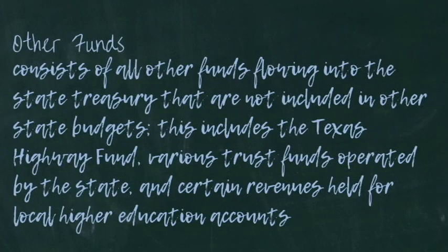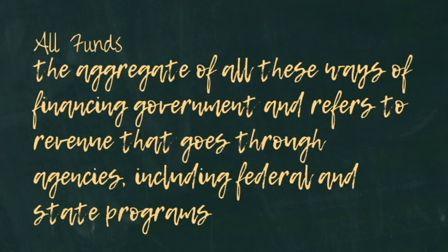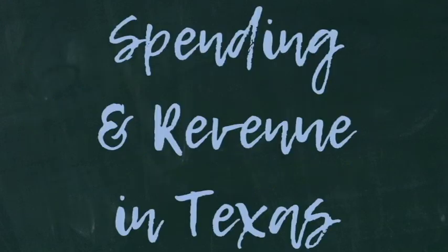Other funds consist of all other funds going into the state treasury not included in the other budget categories, including the Texas Highway Fund, various trust funds, and certain revenues held for local higher education — $31.8 billion was appropriated from other funds for 2018–2019. All funds is the aggregate of all these ways of financing government, referring to all revenue that goes through agencies including federal and state programs.